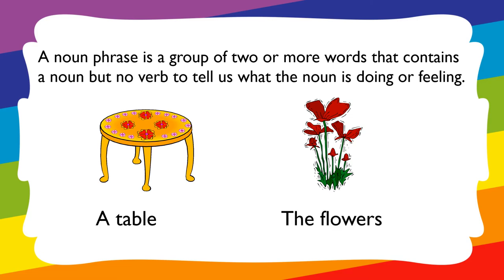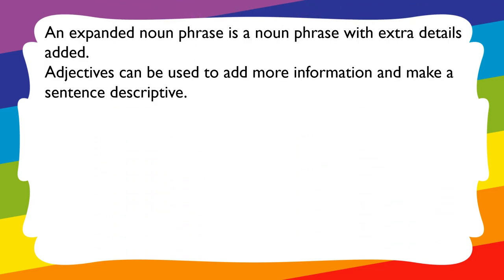Here we have examples: 'a table' and 'the flowers.' We do not know what the flower or the table is doing, or how these noun phrases are feeling. These are noun phrases. We need to expand these noun phrases so that we might be able to know what they are doing or how they are feeling. An expanded noun phrase is a noun phrase with extra details added. Adjectives can be used to add more information and make a sentence descriptive.